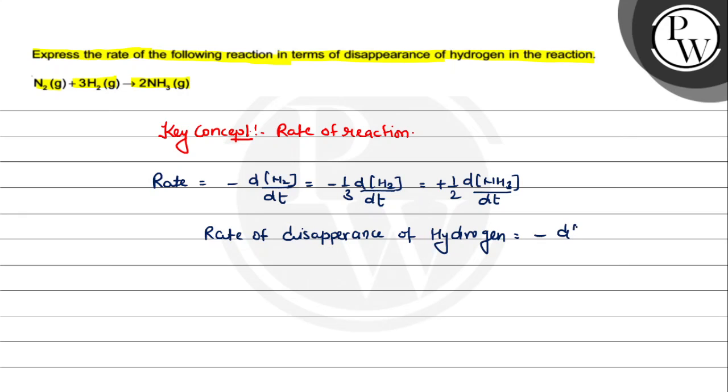Which is minus sign d[H2]/dt. We can write rate in terms of disappearance of hydrogen. Hence we'll write it again which is minus 1/3 d concentration of H2 divided by dt. So this is the final answer of your question. Hope you understood it well. Best of luck.